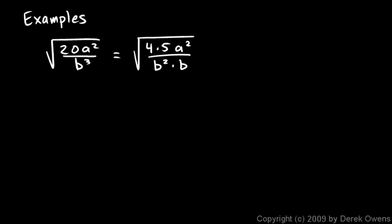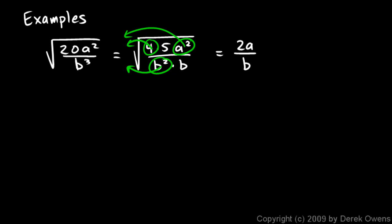So what happens here? The 4 can come out from under the radical and become a 2. The a squared comes out from under the radical and becomes an a. And this b squared down here is going to come out from under the radical and become a b in the denominator. So we end up with a 2 and an a in the numerator — the 2 came from square rooting the 4, and the a came from square rooting that a squared. In the denominator we get a b, from square rooting that b squared. And then we still have a 5 under the radical in the numerator, and the b under the radical in the denominator — so this is times the square root of 5 over b.